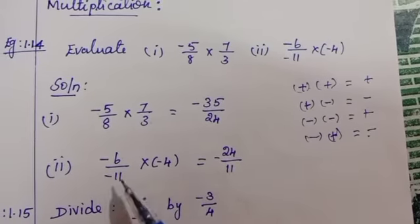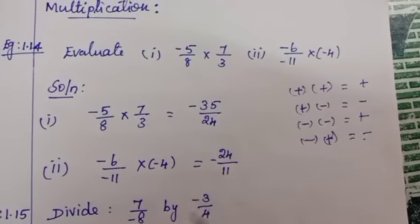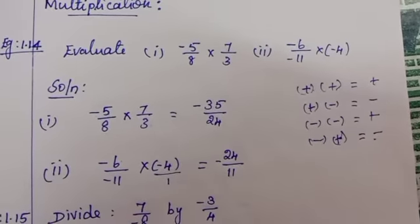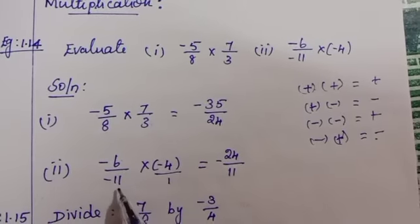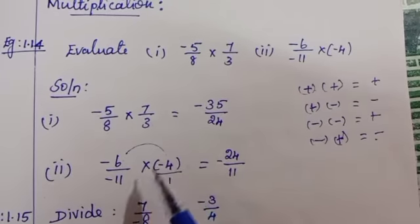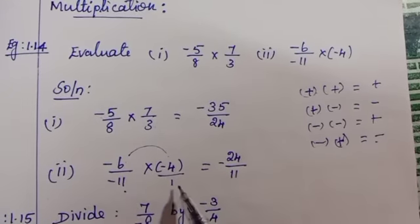The second problem: -6/11 × (-4). The denominator is not given, what is that meaning? The denominator is considered as 1. So that is -6/11 × (-4)/1. Now you have to multiply: 6 × 4 = 24, 11 × 1 = 11.